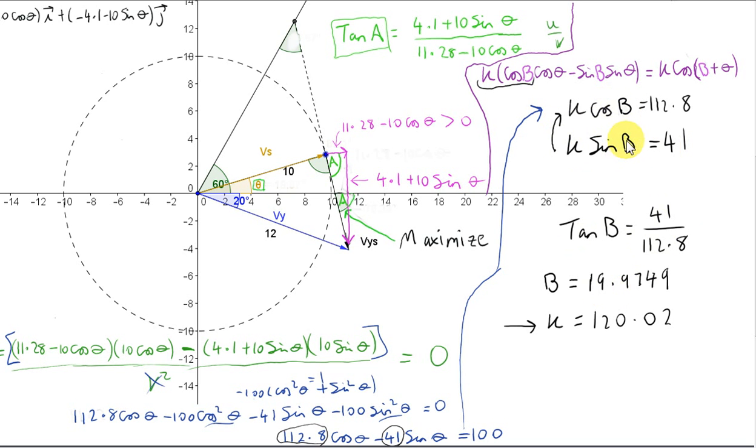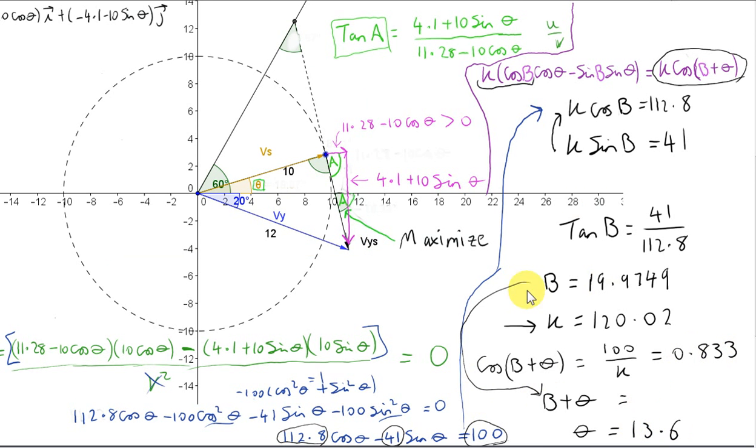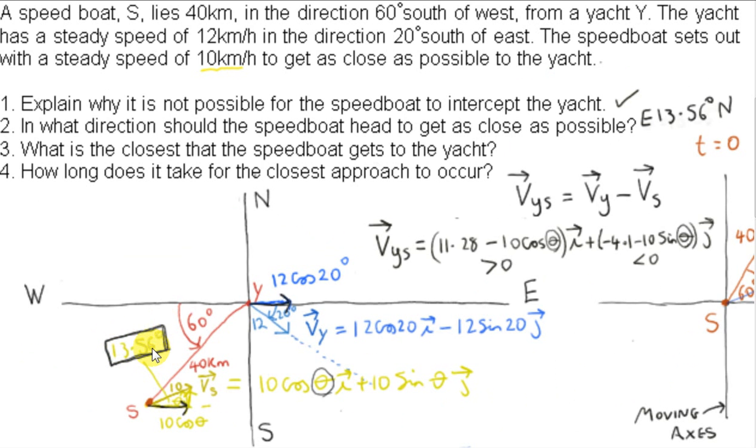Now, once B has been found, we can plug it into one of these two equations to find out what K is. Now we can go and get theta. So what I can do is I can compare the right-hand side to 100. So K cos(B plus theta) equals 100 or cos(B plus theta) is 100 divided by K. So now we can get B plus theta and from that we can get theta because we have B. So we have to subtract B. Now this is roughly what we got last time. To one decimal place, this is 13.6. There's been quite a bit of rounding going on. The last time using the geometrical method, we got 13.56, which is actually more accurate.